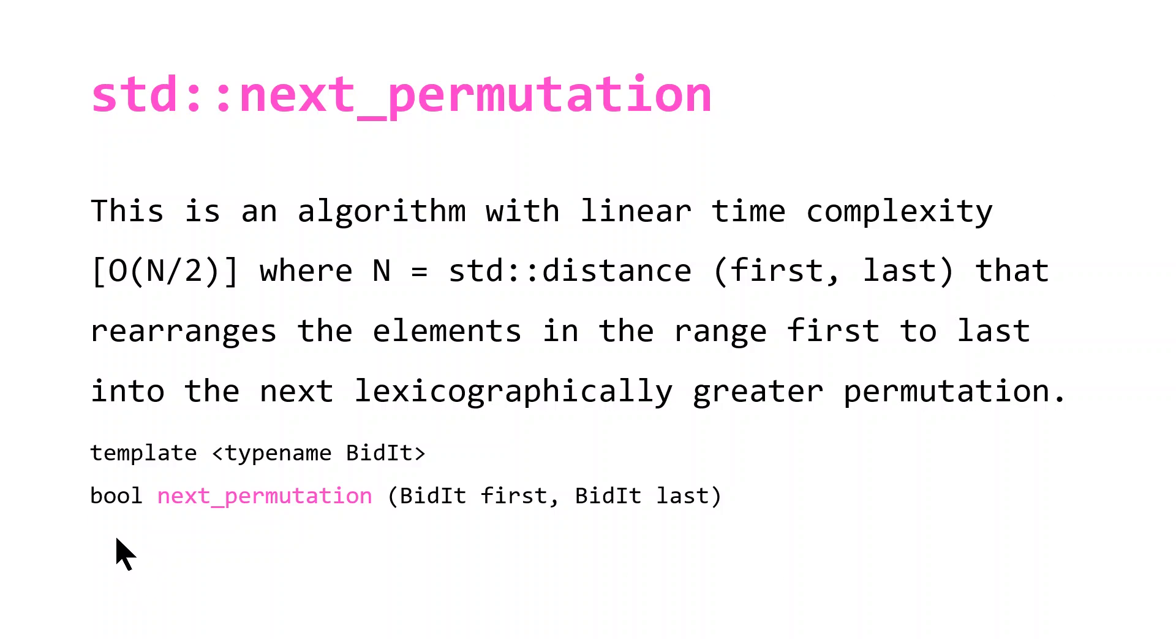We can see that our algorithm is returning a boolean. It will return true when it successfully permuted the range that we give it, and it will return false when there are no more possible permutations.